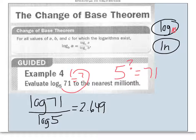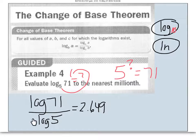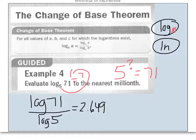Be careful when you type this in — people always struggle with which goes where. The base of the logarithm is always the one that goes on the bottom. It has nothing to do with which number is larger. Always put the log of the base on the bottom and the log of the argument on the top.